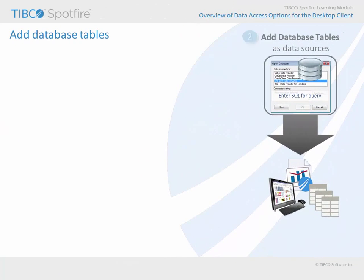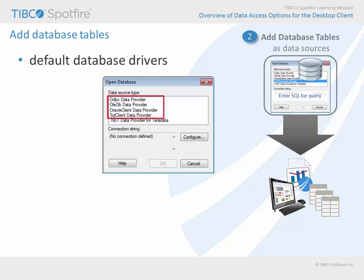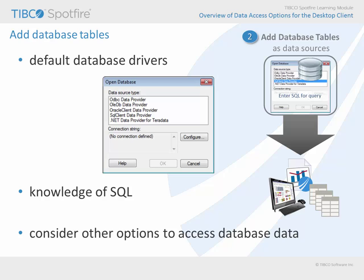A second way of accessing data for analysis is to add tables directly from databases. By default, Spotfire can open data source types using several common database drivers. Other data sources may be available depending upon your installed data providers. Note that the use of this approach may require that you write a SQL statement if you wish to limit data which is made available for analysis. In addition, this is generally not the recommended approach for gaining access to database data. Data connections tend to be more robust options for analyzing database data, but we'll talk more about these options in a moment.